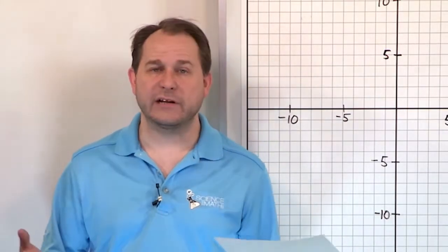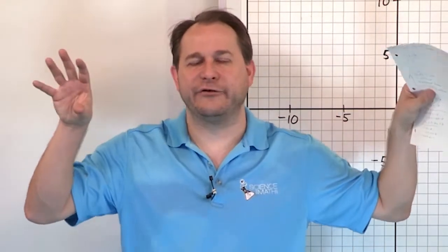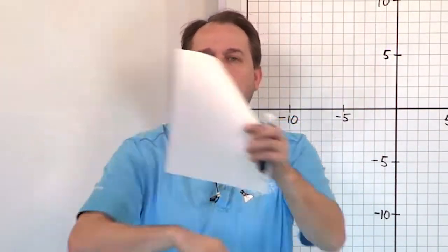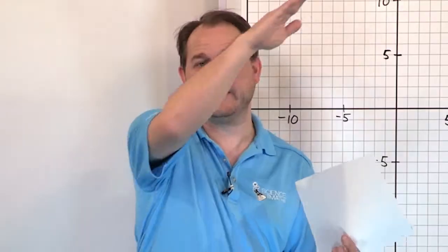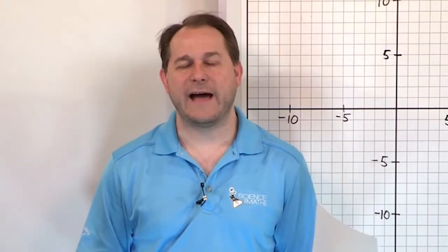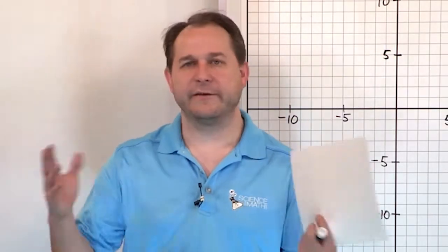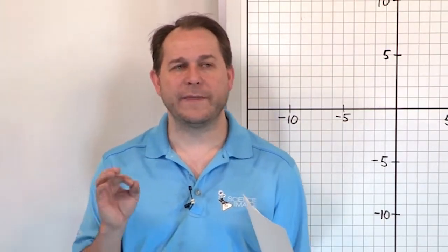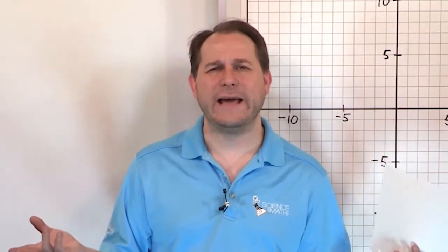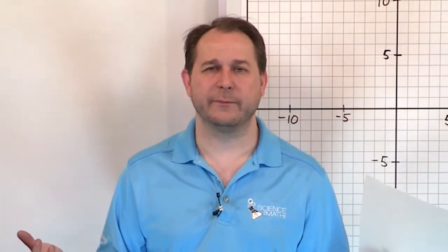Then we have a third case where it looks like there are two equations, but they actually turn out to be the same equation, with both lines sitting right on top of each other — literally the exact same lines — and we call that a dependent system. We're going to learn how to solve all of these kinds of equations, and here we're going to learn how to use the technique of graphing. A lot of students ask why we have so many different ways of solving systems of equations.